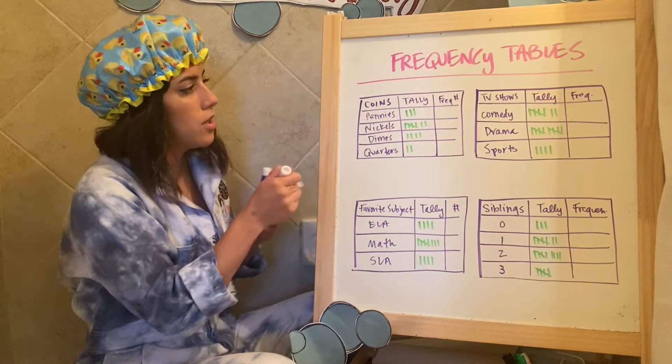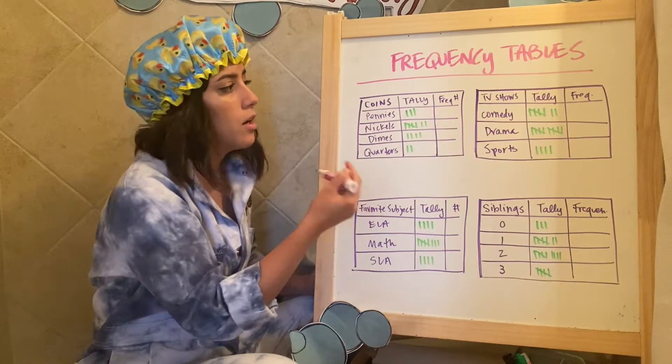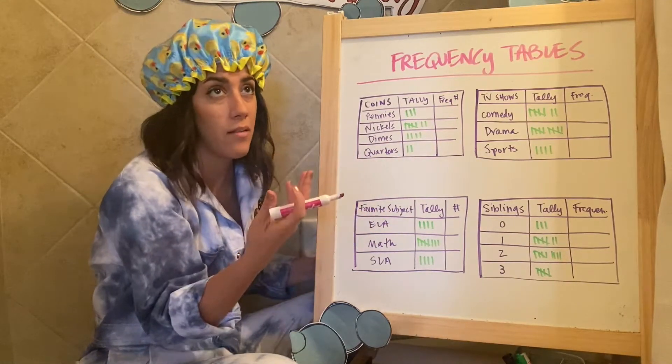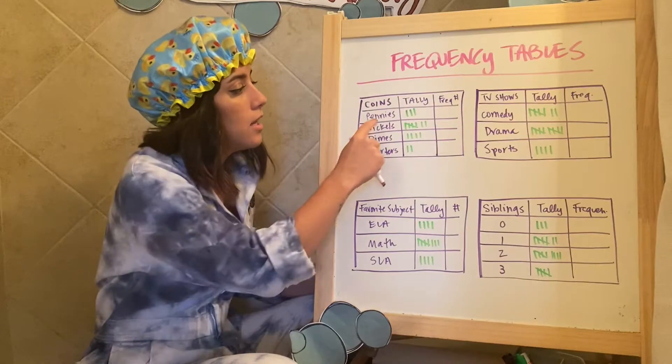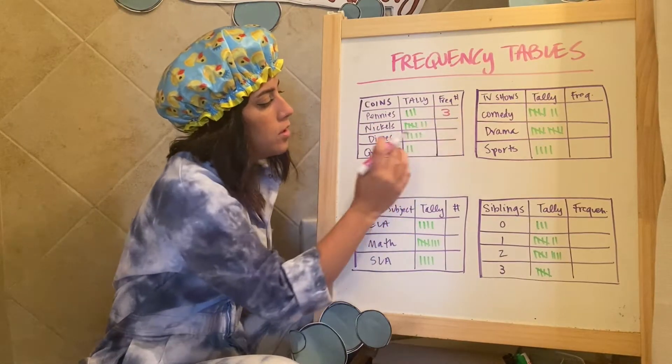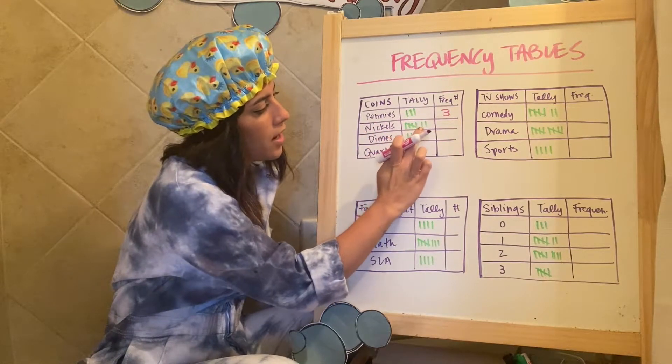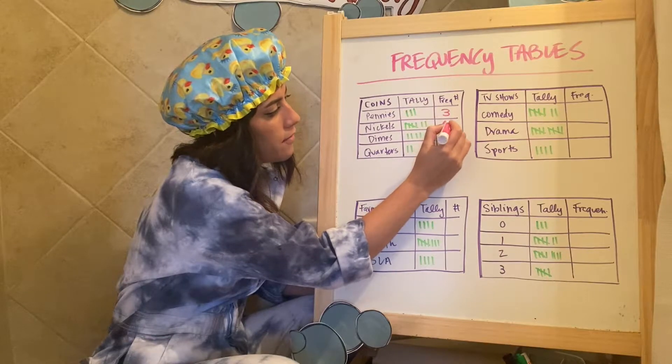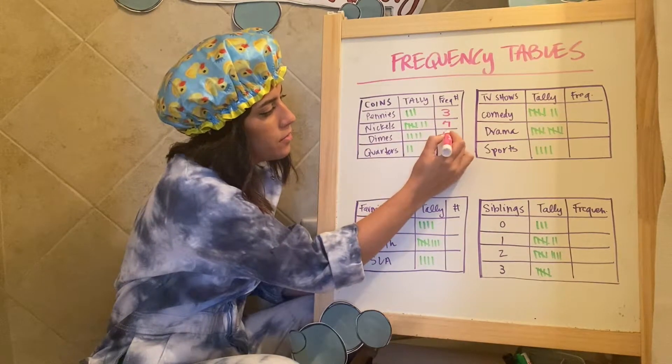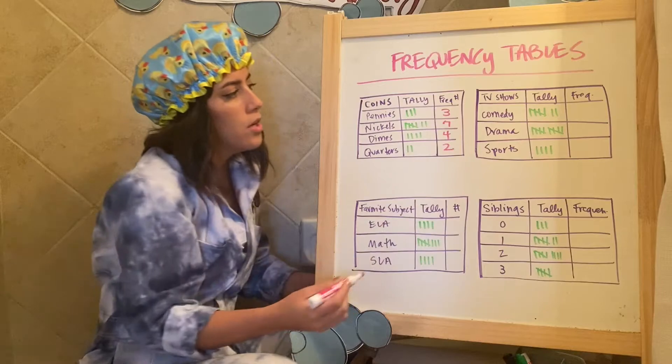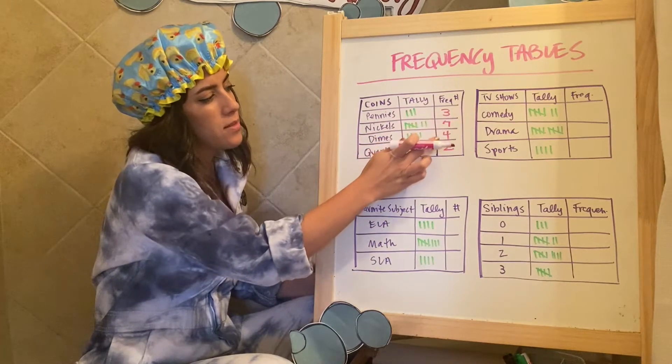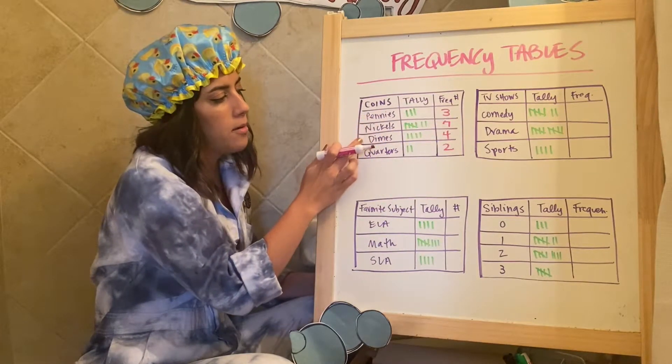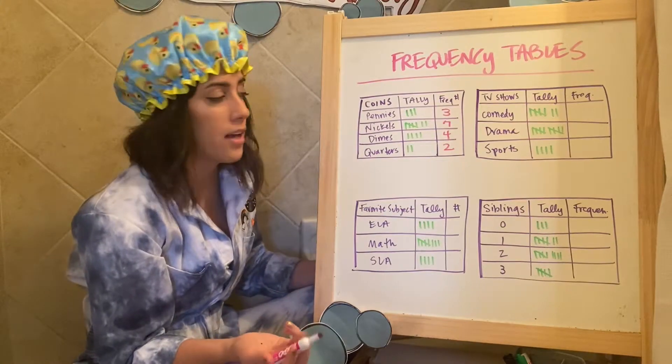So filling in these charts to get the frequency or the number of times that they had this, or it was presented pennies. There were three people nickels. I can see that that's five plus two more. That's seven, dimes, four quarters, two.